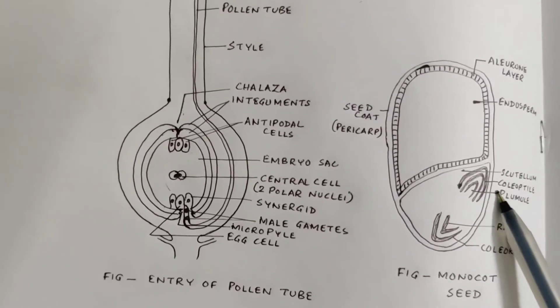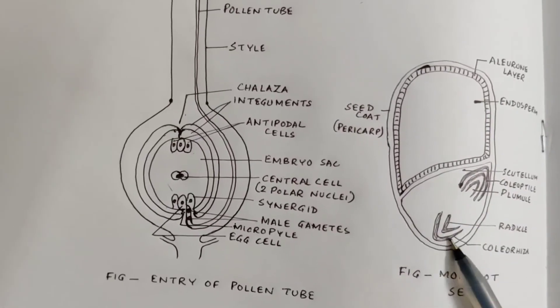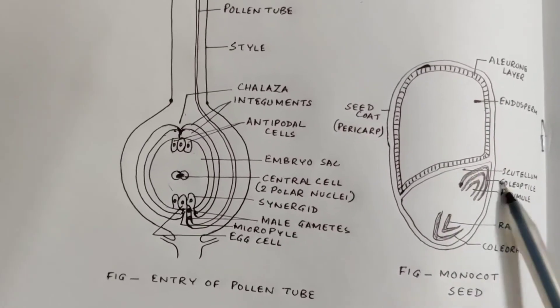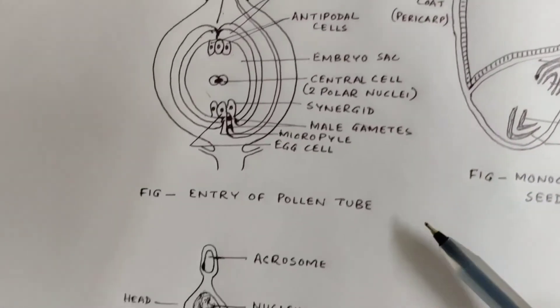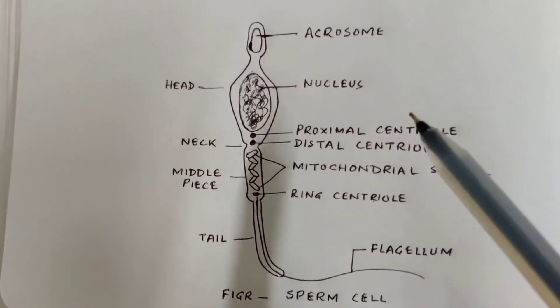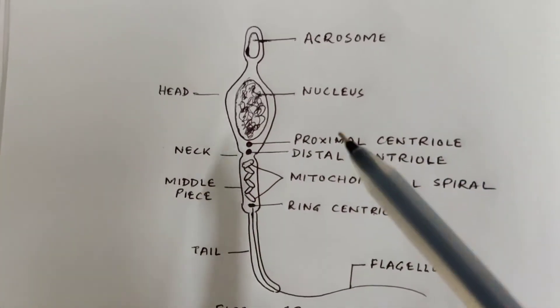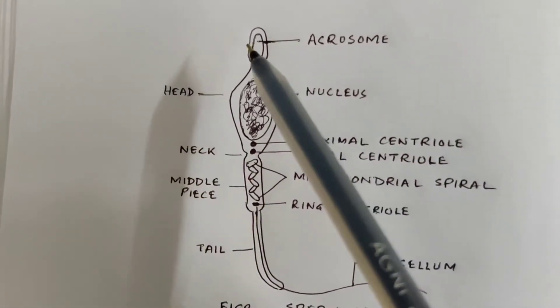Above the plumule we have a protective layer called coleoptile. The single cotyledon is known as the scutellum.